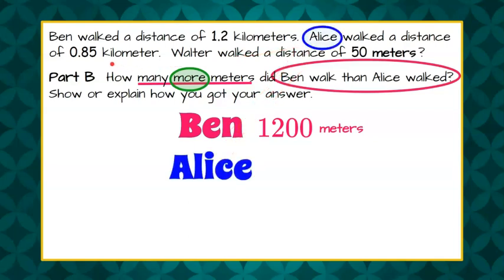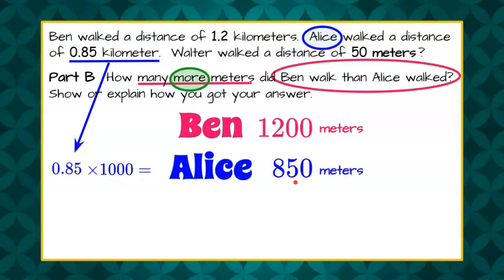So Alice walked a distance of 85 hundredths of a kilometer. So we're comparing in meters. So we need to do the same thing for Alice's that we did for Ben's measurement. So we're going to take our 85 hundredths of a kilometer and we're going to multiply it by 1,000 to go to meters. So that means I'm going to move my decimal point three spaces to the right to make it larger because I'm multiplying by 1,000. So when I do that, I have two digits already here and I need to add a zero, giving me 850 meters for Alice.